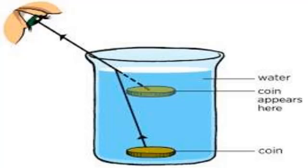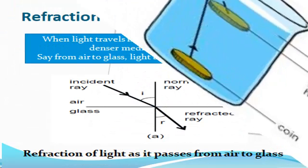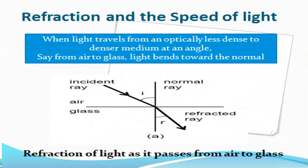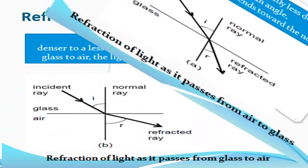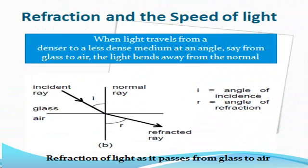When light travels from air to water, its speed decreases. A medium is optically dense if it slows down the speed of light. Water is optically denser than air. When light travels from an optically less dense to denser medium at an angle, say from air to glass, light bends toward the normal. When light travels from a denser to a less dense medium at an angle, say from glass to air, the light bends away from the normal.